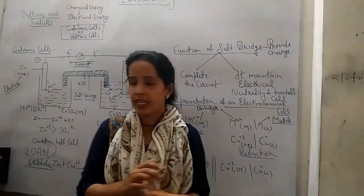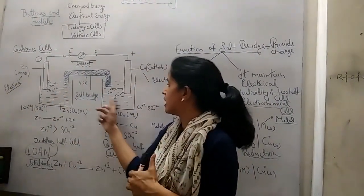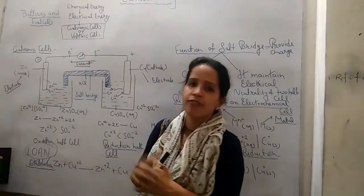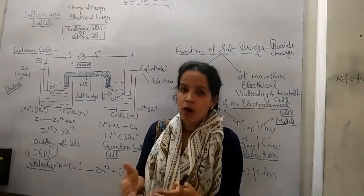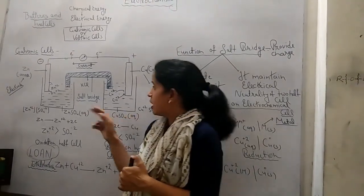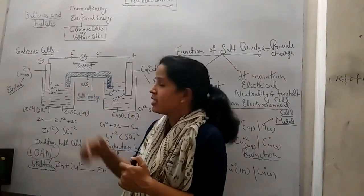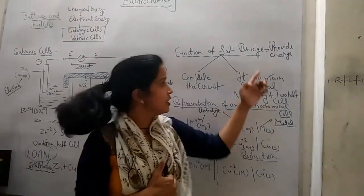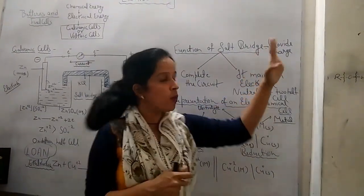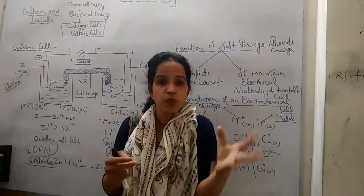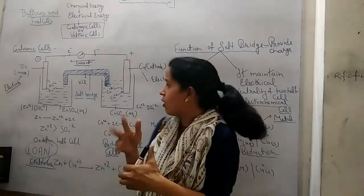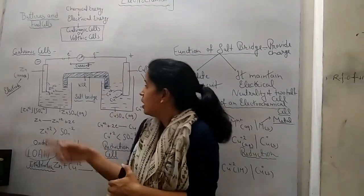It completes the circuit and also it maintains the electrical neutrality of the two half cells. It maintains the electrical neutrality of the two half cells. How? It provides the charges needed for neutrality.